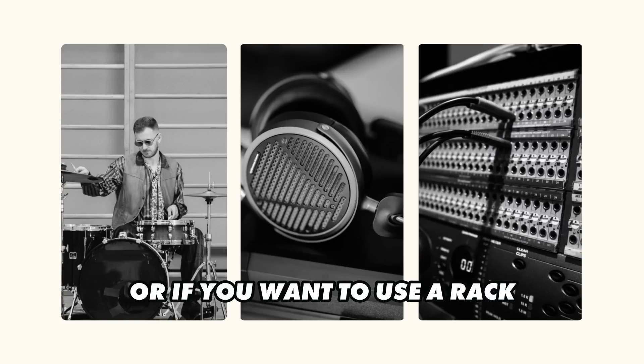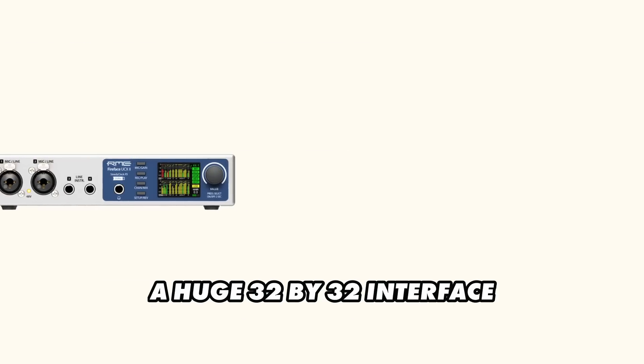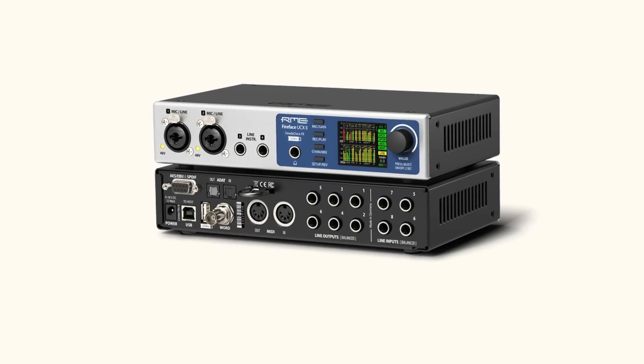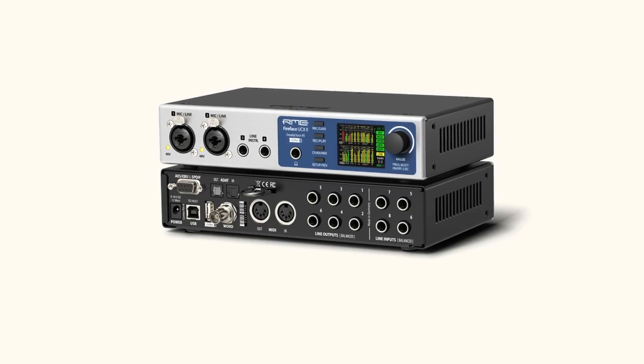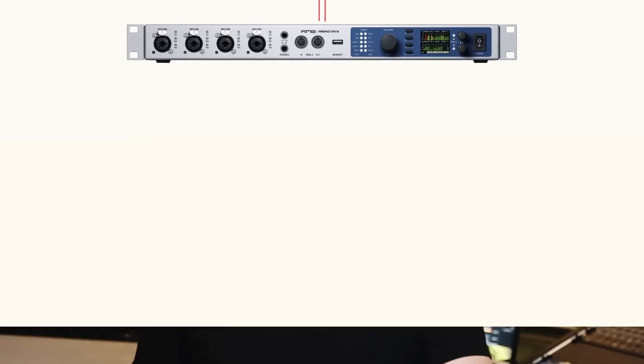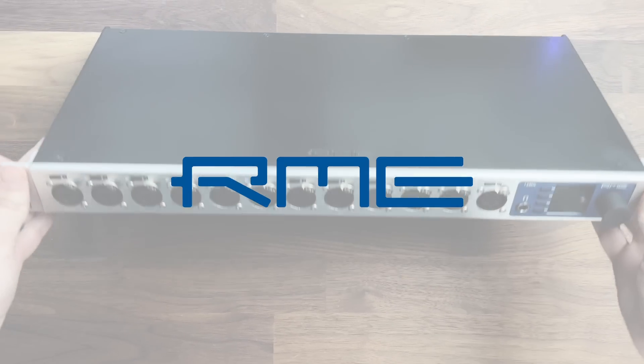If you want to record a full band with 24 inputs and six stereo headphone mixes, or if you want to use a rack of outboard gear for mixing, you might think you need a huge 32-by-32 interface. Well, actually no — thanks to digital audio protocols, you can use a relatively affordable audio interface with only two or four mic preamps and expand it to suit your needs for years to come. In this video, I'll show you some ideas for how you can do much more than you'd assume was possible.